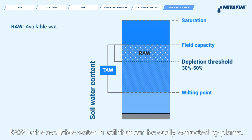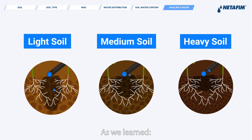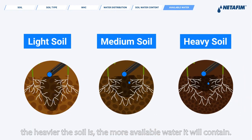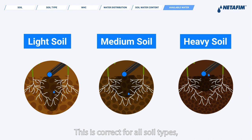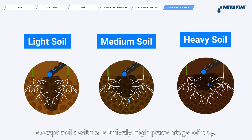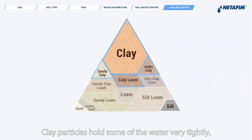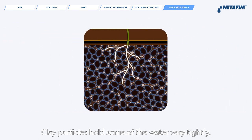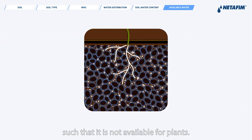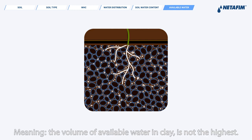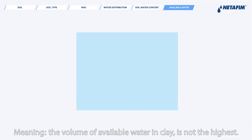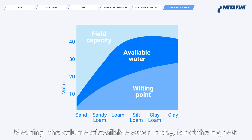RAW is the available water in soil that can be easily extracted by plants. As we learned, the heavier the soil is, the more available water it will contain. This is correct for all soil types, except soils with a relatively high percentage of clay. Clay particles hold some of the water very tightly, such that it is not available for plants. Meaning, the volume of available water in clay is not the highest.